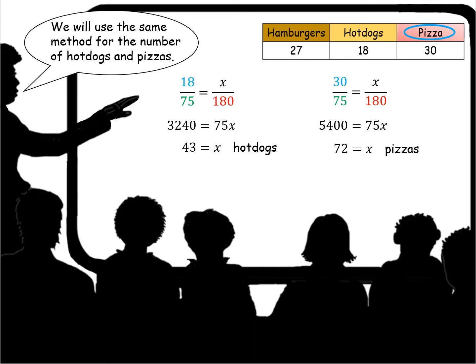And for pizza, we do the same thing. There were 30 players that preferred pizza out of our 75 sample size, and how many would that be for 180? Well, 30 times 180 is 5,400, that equals 75x, and we do the division. We find that we would need 72 pizzas.